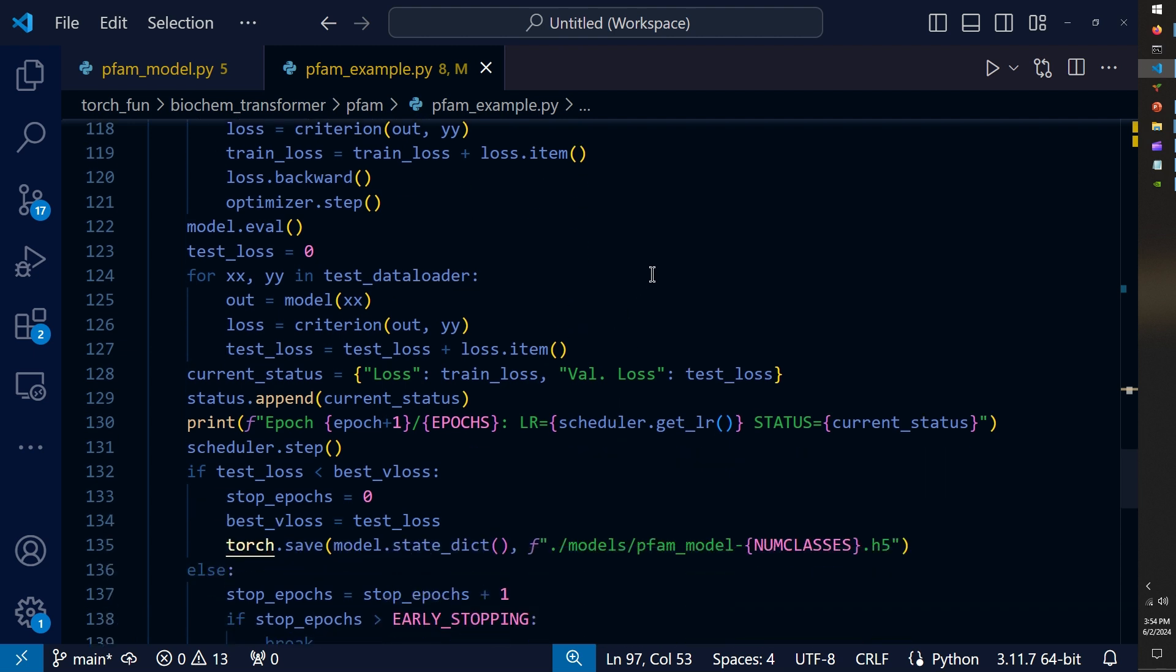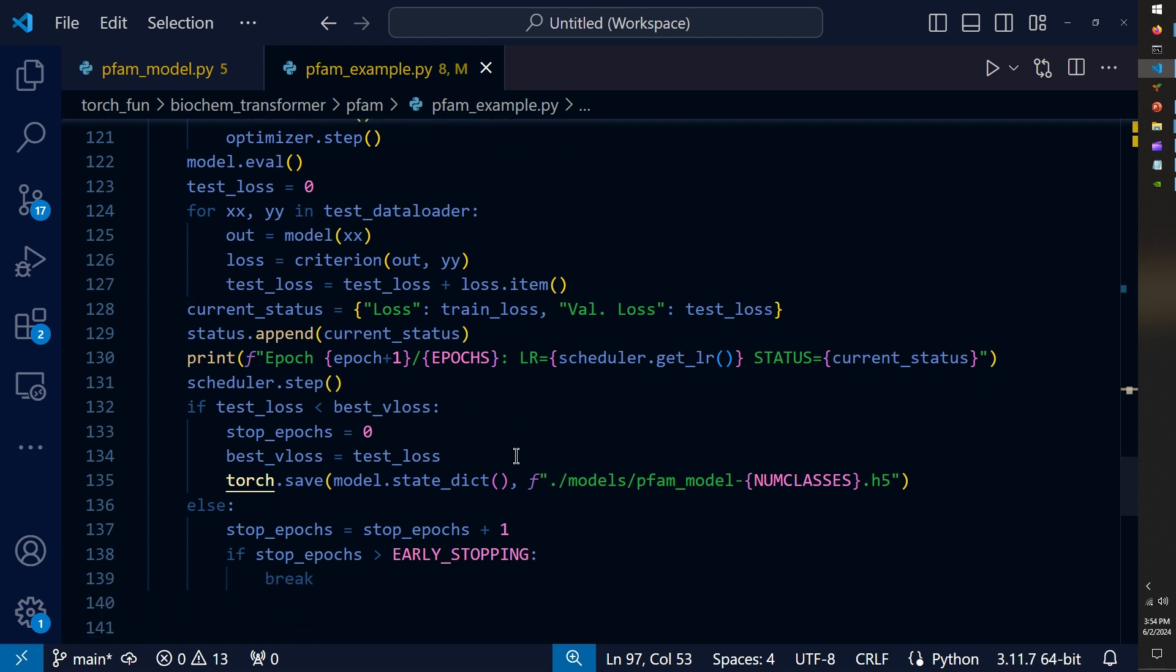I implemented some model checkpointing based on the best validation loss as well as early stopping. I didn't end up using the early stopping, but I do use the best checkpointed model upon inference, which in the cases of this experiment were the last model run typically.